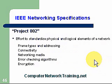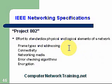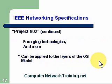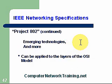Project 802 is a very important project by the IEEE. This effort standardizes the physical and logical elements of our network — frame types, addressing, connectivity, networking, all the different types of media, error-checking algorithms, and encryption all come under 802. As new technologies emerge, a new subcommittee and subsection of 802 is created to come up with specifications to standardize that technology for the entire industry.